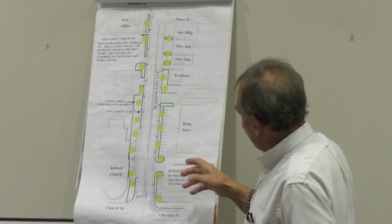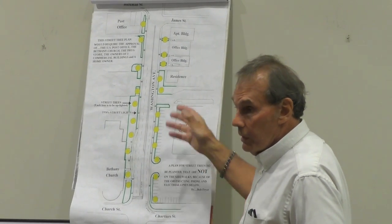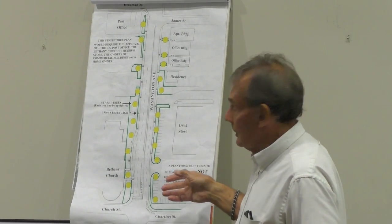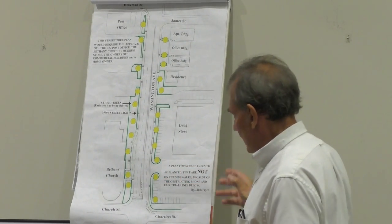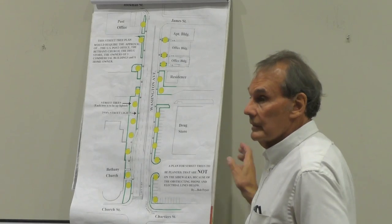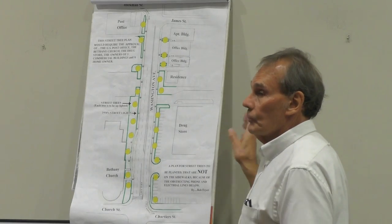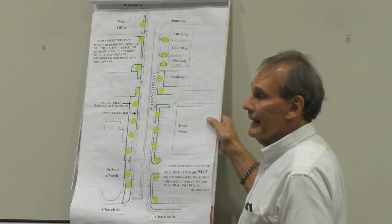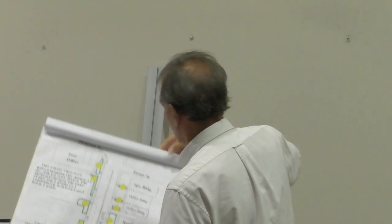The areas in green show all of the green grass that exists on both sides of the street. And with cooperation with the people along the street, you could have a spectacular-looking entrance to the community, especially by uplighting the trees, which is very dramatic.